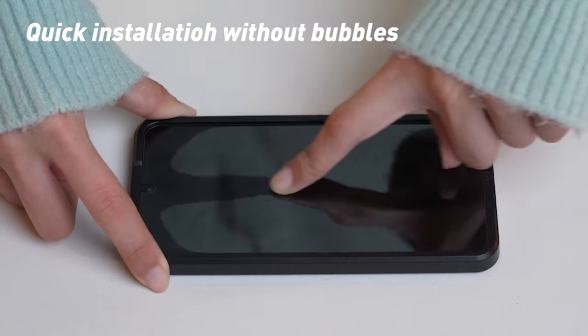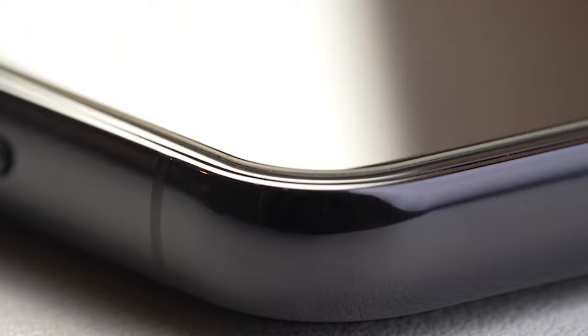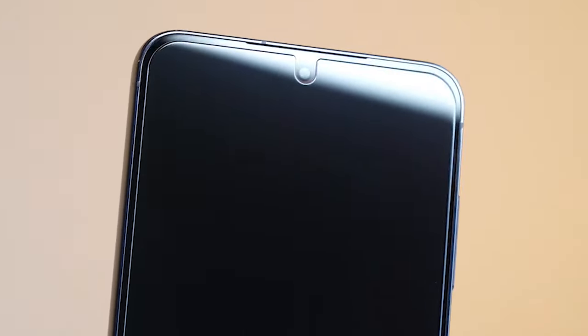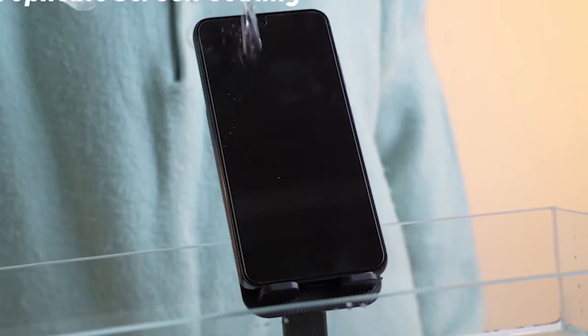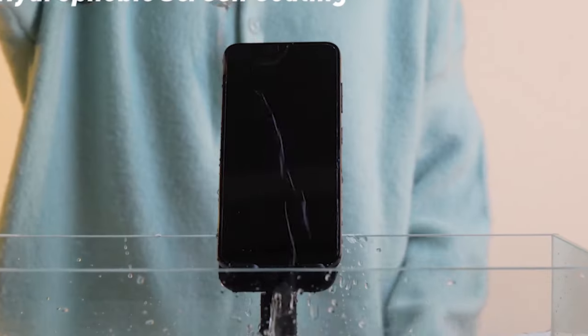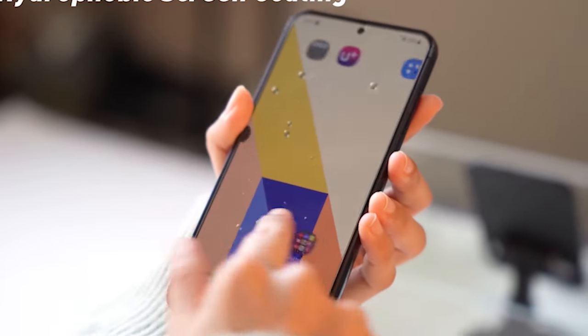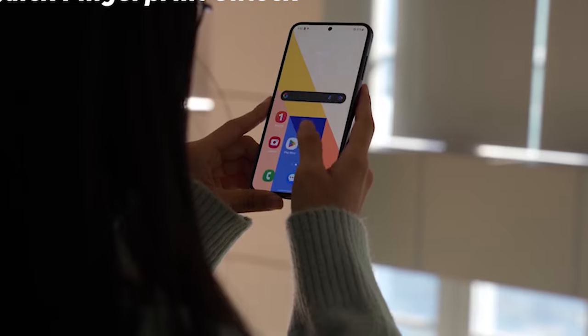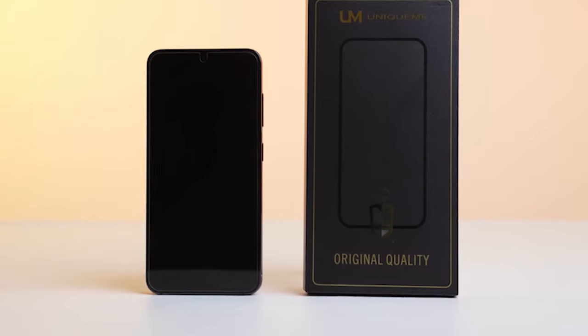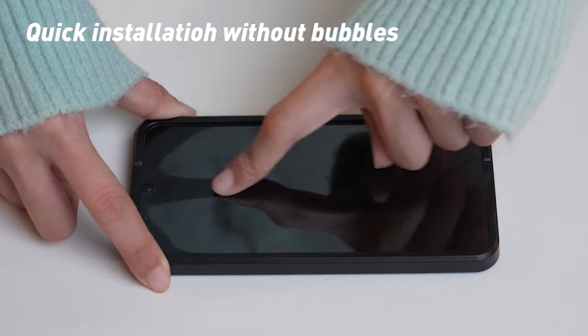One of the standout features of the Screen Protector is its 3D curved edge, which perfectly replicates the Samsung S24 Plus screen design. This unique design encompasses the all-screen curves, offering a seamless fit that is compatible with the majority of smartphone cases available on the market. You can rest assured that your entire screen is adequately protected thanks to the edge-to-edge coverage, preserving your S24 Plus's sleek and stylish appearance.